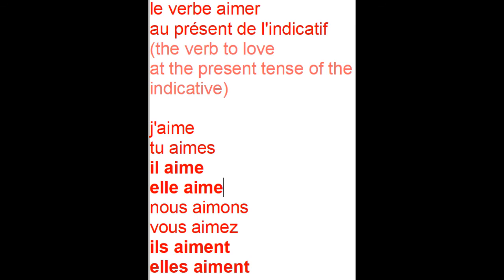Hi everyone! This lesson is about how to conjugate the verb 'to love' at the present of the indicative. So in English: I love, you love, he/she/it loves, we love, you love, they love. Okay, so this verb is called 'le verbe aimer.'